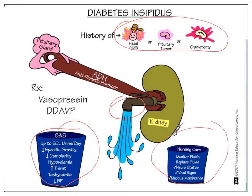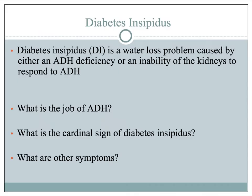Nursing care associated with diabetes insipidus requires monitoring fluid intake and output very closely, replacing fluids as needed, and monitoring their neurostatus. What happens is they end up with a fluid and electrolyte imbalance. Diabetes insipidus is a water loss problem caused by either a deficiency in antidiuretic hormone or inability of the kidneys to respond to it.